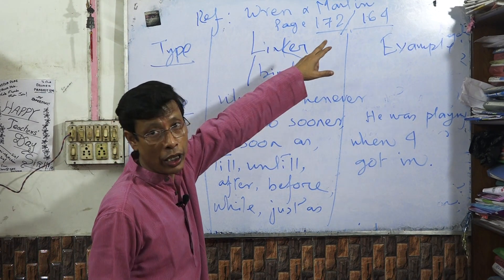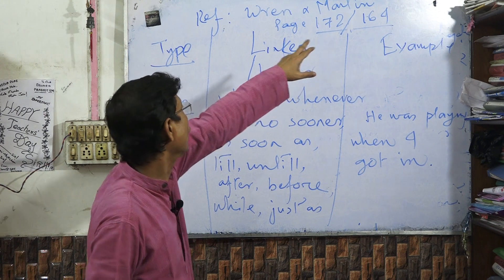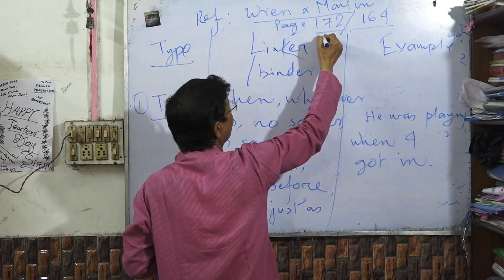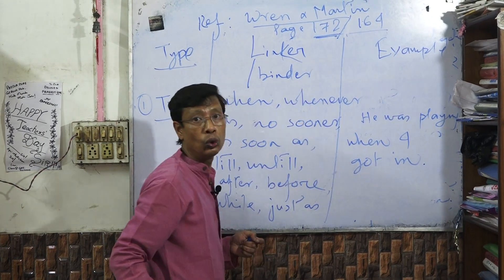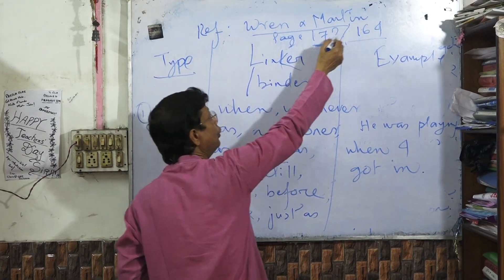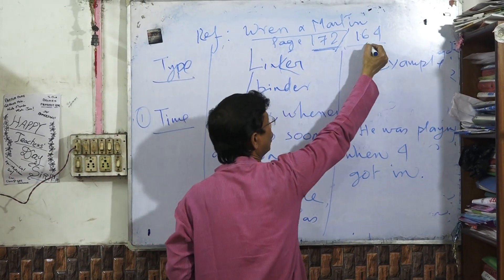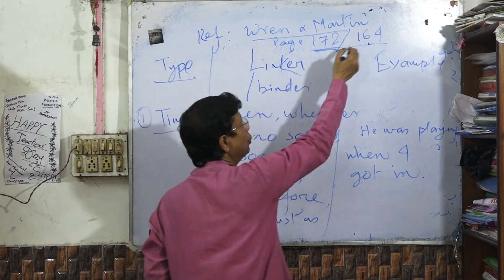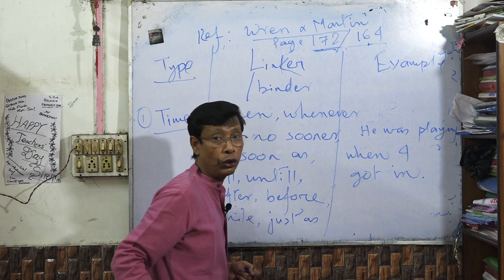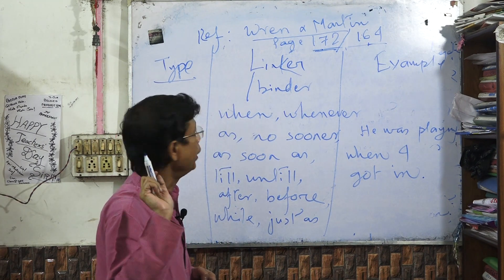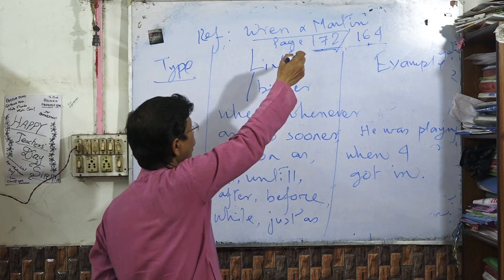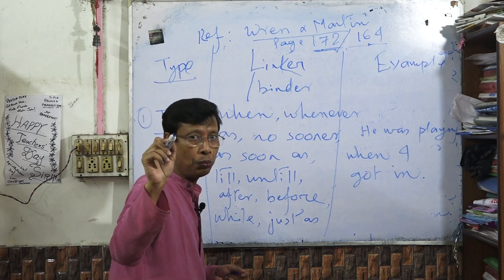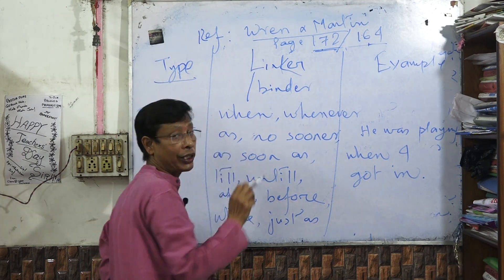Details about the types of adverbial clauses are available in Wren and Martin, page number 172 (new version) or page 164 (old version). I will forward it in the group and act on the example.